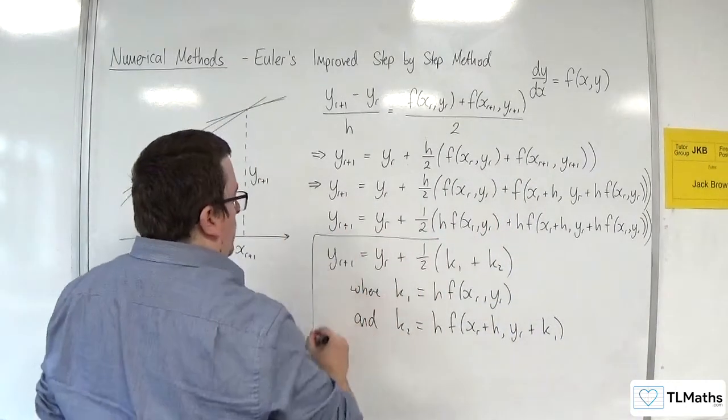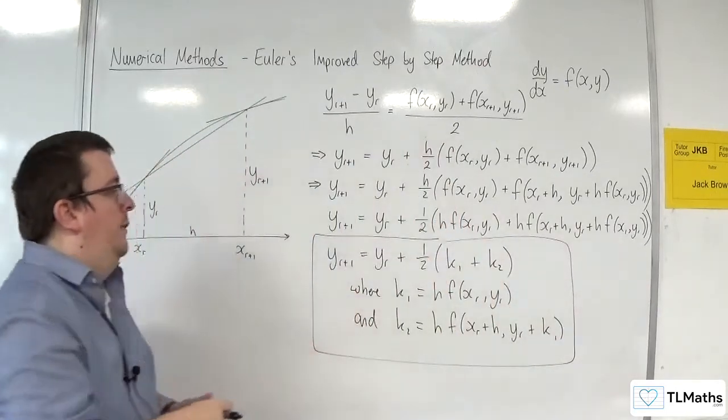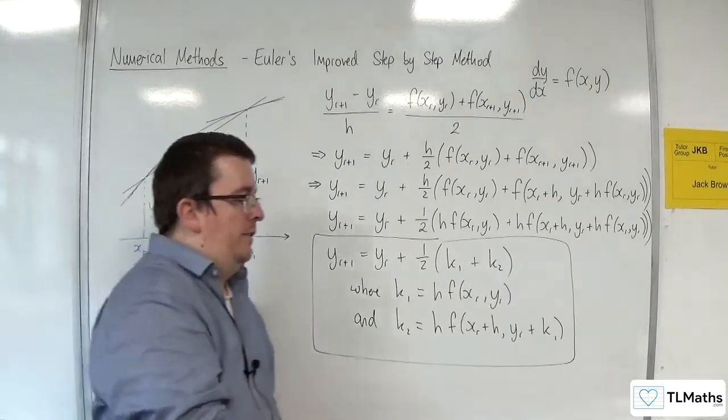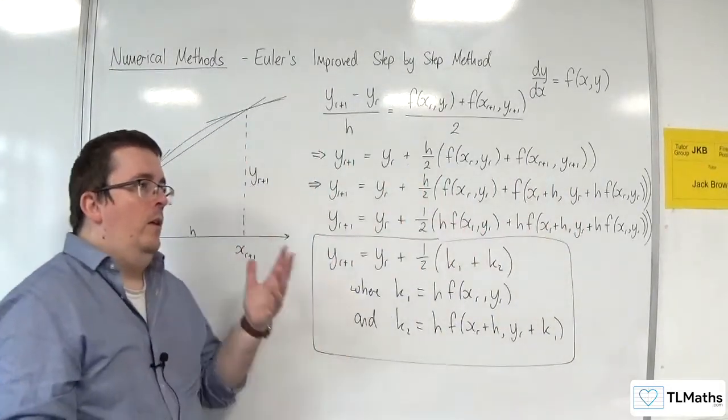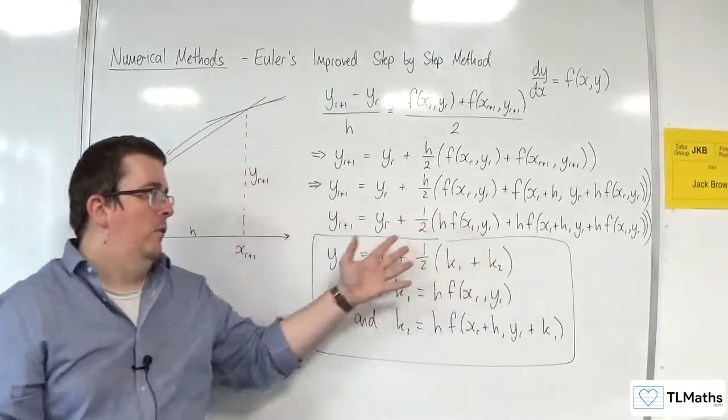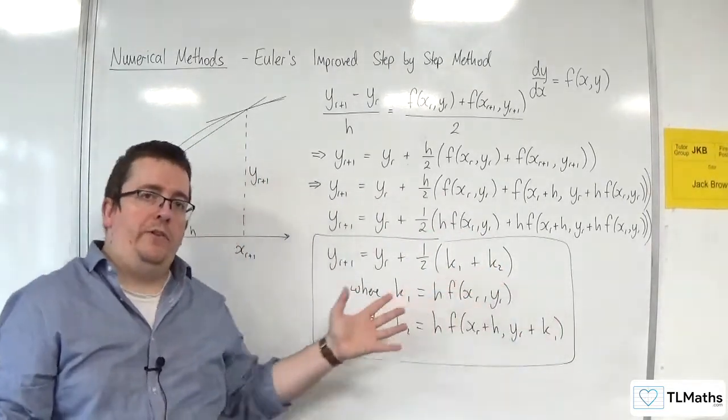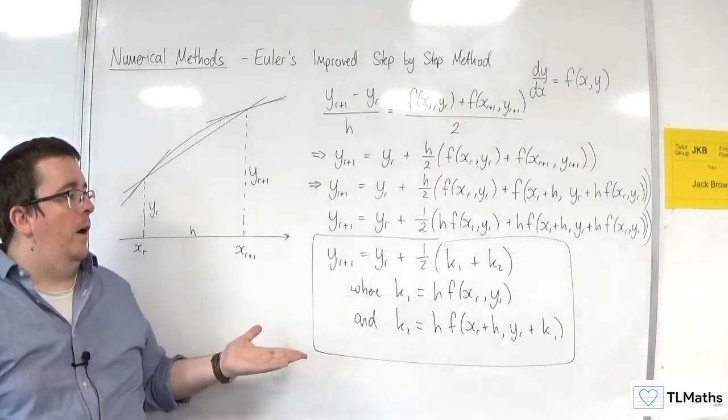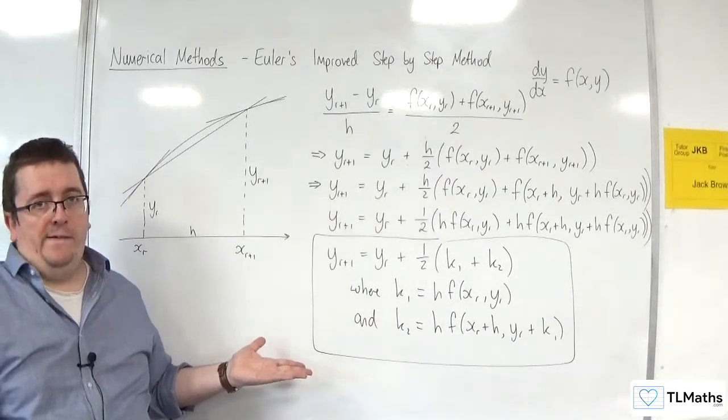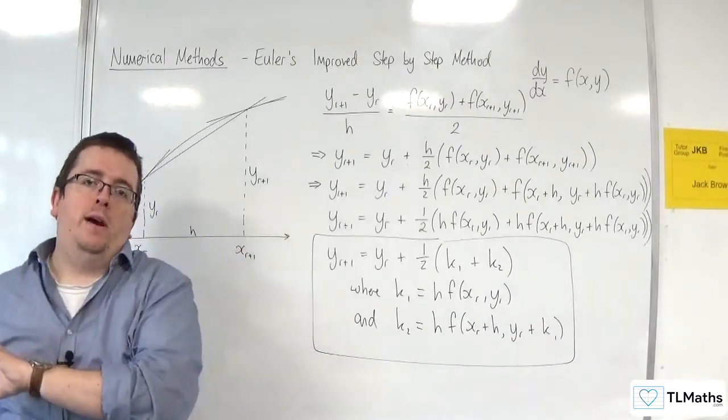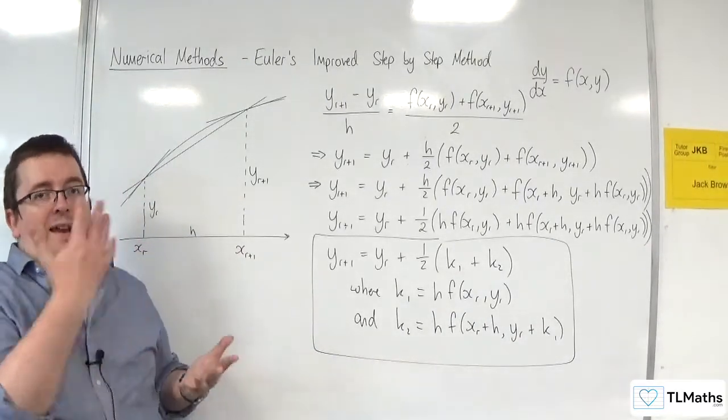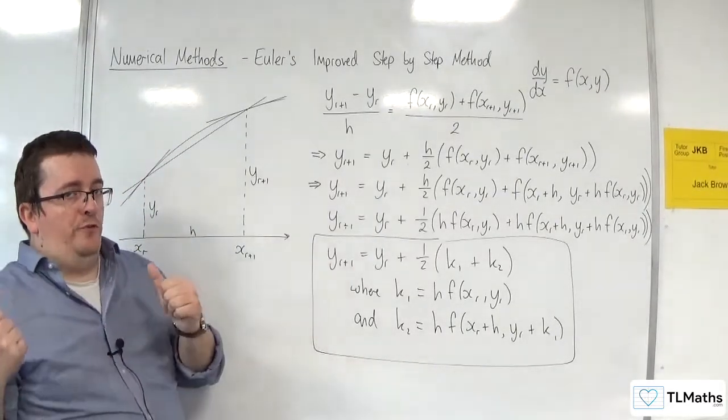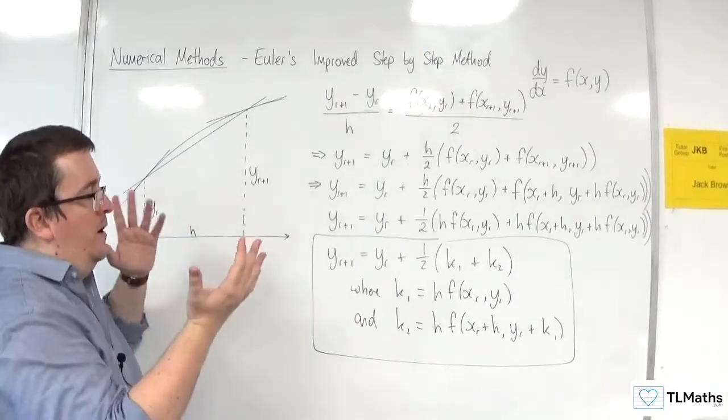And so, this is referred to as Euler's improved step-by-step method. Now, this is what I have always known as Euler's improved step-by-step method. And the previous method, in the previous video, I've referred to as the midpoint formula. In the formula booklet for AQA, they refer to the previous one as Euler's improved method. So, they might use that one, the midpoint formula, or they would use this one.